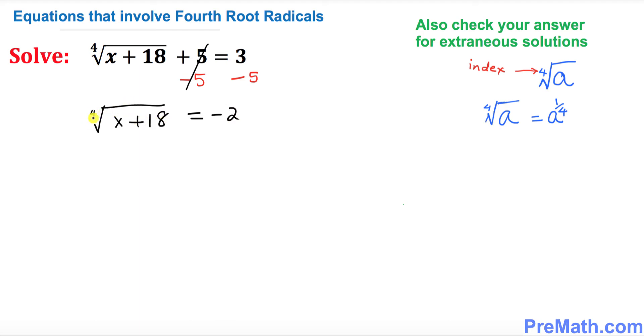Now we want to undo this fourth root, so we'll take the power of 4 on both sides. The power 4 and fourth root undo each other, so we end up with x plus 18 equals negative 2 to the power 4.